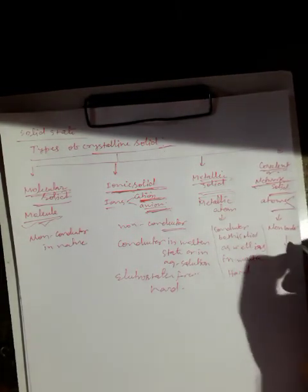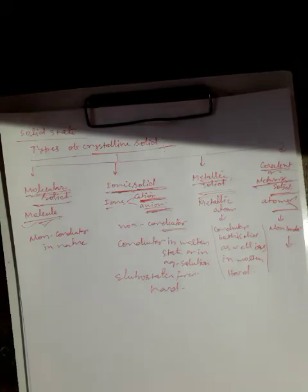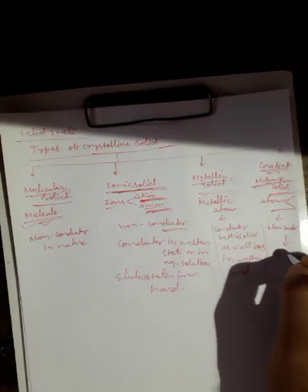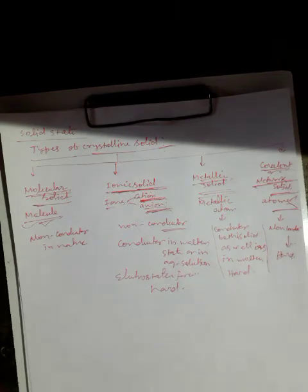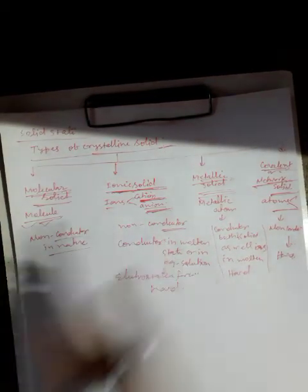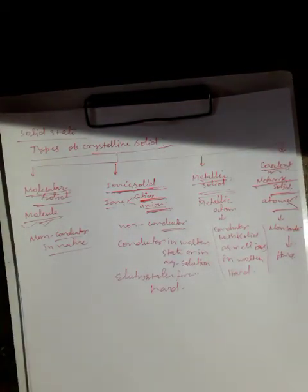Covalent solids, in which constituent particles are held together by covalent bonds, are also hard. Molecular solids have three sub-types, in which polar and non-polar solids are usually soft, but hydrogen bonded solids will be hard.